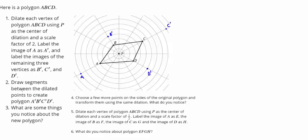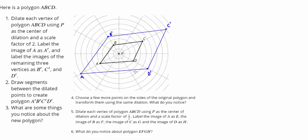Step number two says draw segments between the dilated points to create polygon A prime, B prime, C prime, D prime. So I'm going to draw lines between these segments. You may have noticed it looks like a larger version of the polygon ABCD. These corresponding angles look the same, and these lines look like they might be bigger versions of the lines from the original.